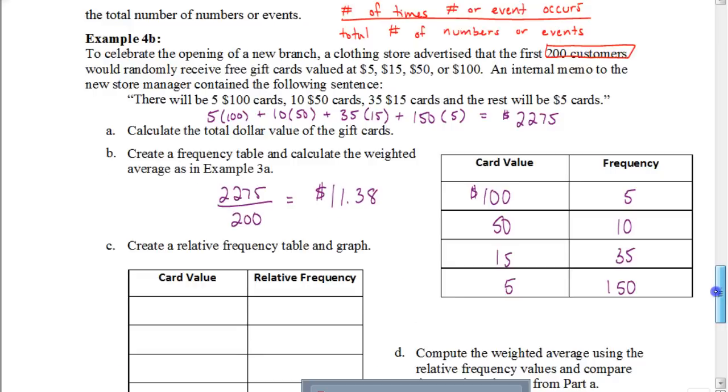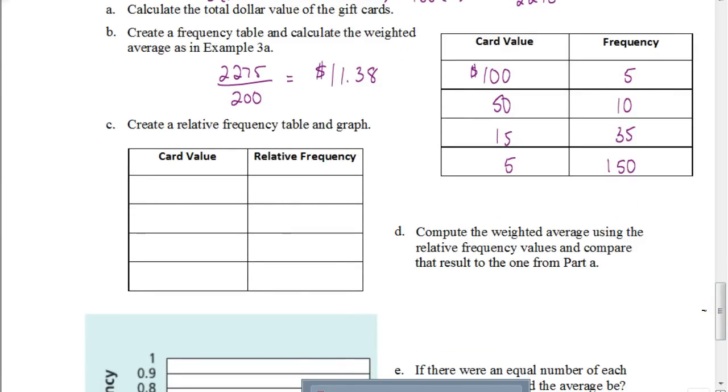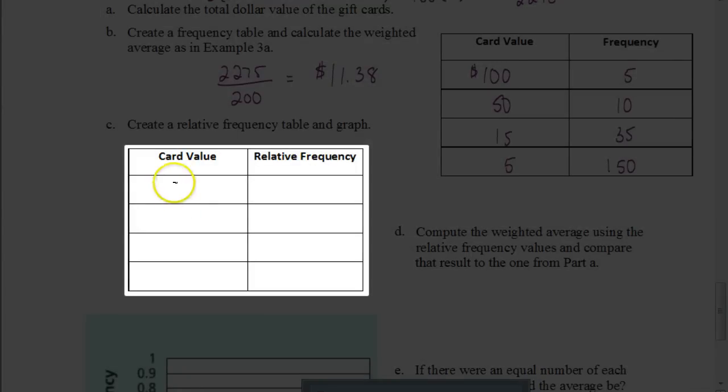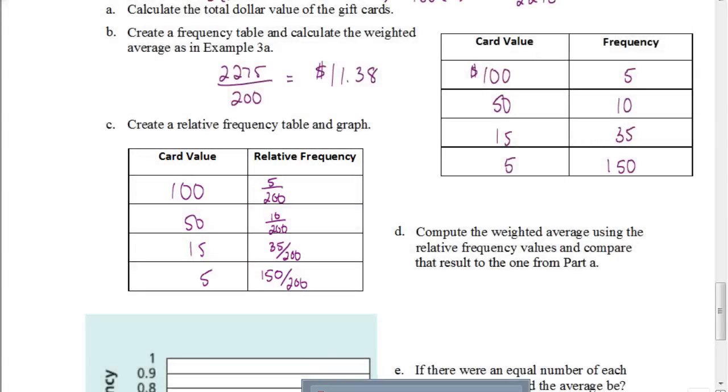So now part C says create a relative frequency table and a graph. Remember, the definition of a relative frequency is that we're going to take the number of times that the event occurs divided by the total number of events. So we're going to have our card values: $100, $50, $15, and $5. The relative frequency for the $100 gift card is 5 times out of a total of 200. The $50 gift card occurs 10 times out of 200 possibilities. The $15 card occurs 35 times out of 200. And the $5 gift card occurs 150 times out of 200. So that is our relative frequency.